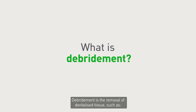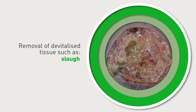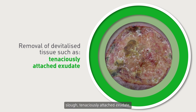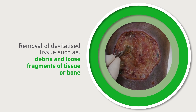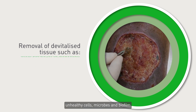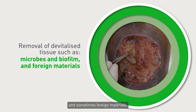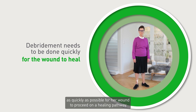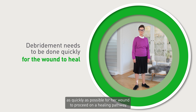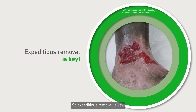Debridement is the removal of devitalised tissues such as necrotic or infected tissues, slough, tenaciously attached exudate, debris and loose fragments of tissue or bone, unhealthy cells, microbes and biofilm, and sometimes foreign materials. If debridement is needed as part of Mary's care, we need to accomplish it as quickly as possible for her wound to proceed on a healing pathway. Devitalised material in her wound bed will provide an environment conducive to growth of microbes, so expeditious removal is key.